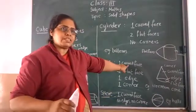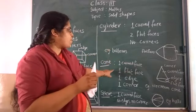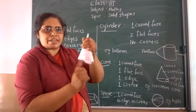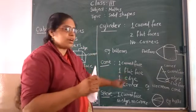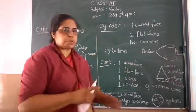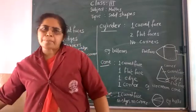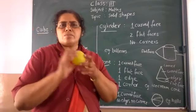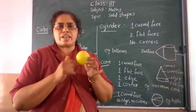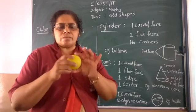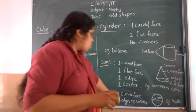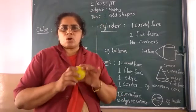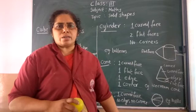Now the sphere. You already know a ball — this is your ball. See, it has only 1 curved face. There are no flat faces, no corners, and no edges. A sphere has only 1 curved face and nothing else.